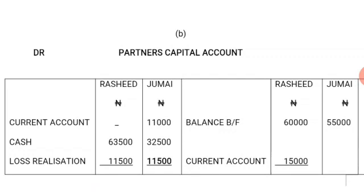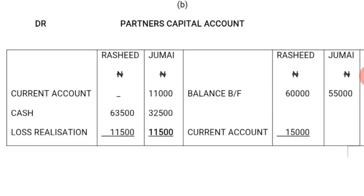Moving on, we have to look at the partners' capital account. From the balance sheet in the question, the capital of Rashid was 60,000 Naira — that will be the balance brought forward for Rashid. And that of Jumai is 55,000 Naira. The current account of Rashid was having a credit balance; therefore, it is brought down to the credit side of the partner's capital account: 15,000 Naira. And that of Jumai was 11,000 Naira.